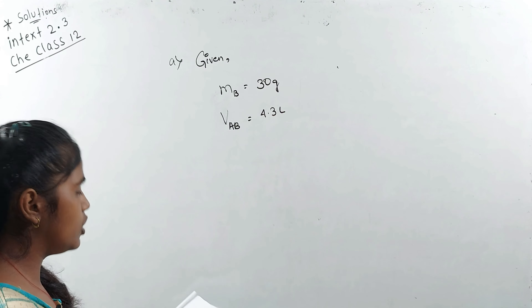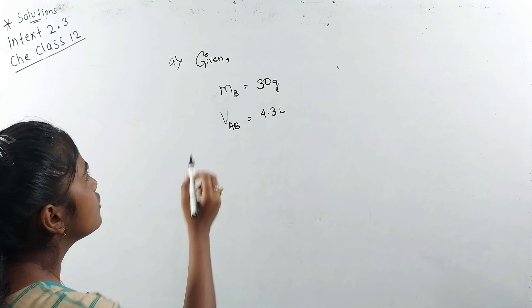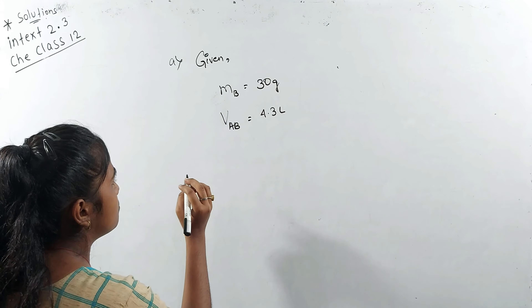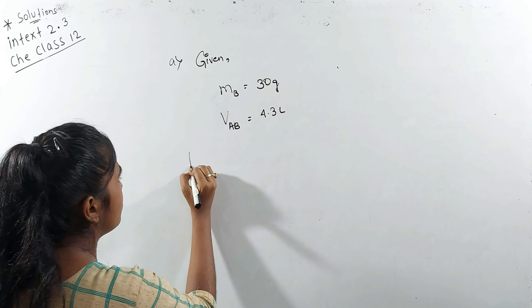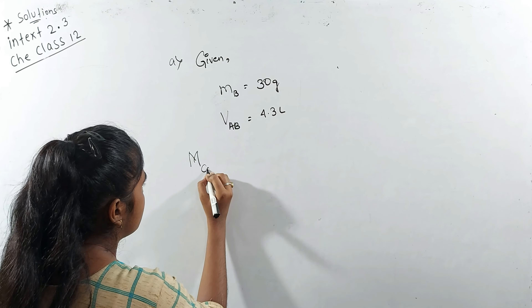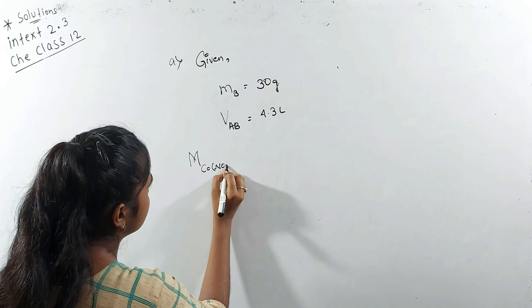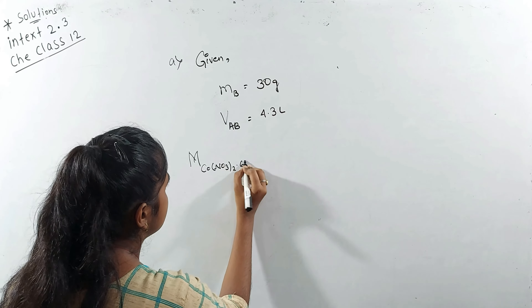So now we will do question number 2.3 in the text. Calculate the molarity of each of the following solutions. First of all, the question is: 30 grams of Co(NO₃)₂·6H₂O in 4.3 L of solution.